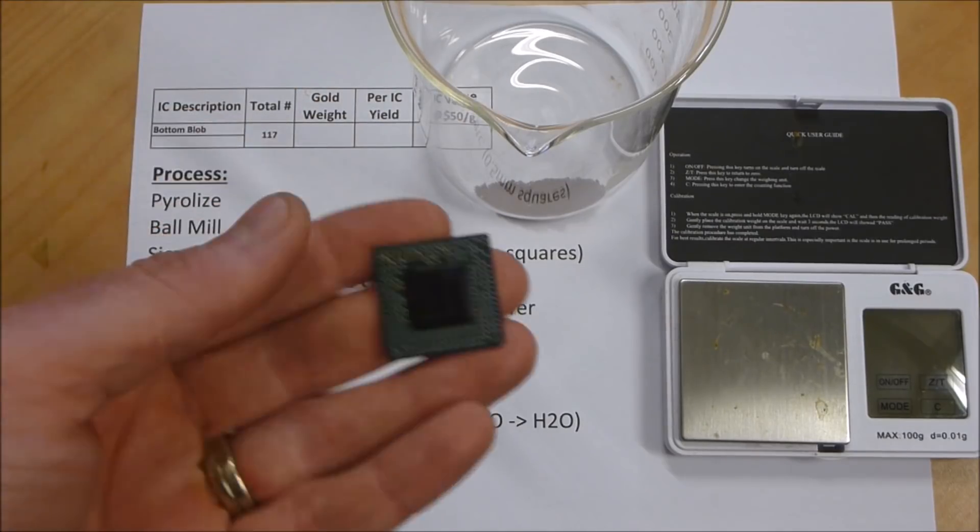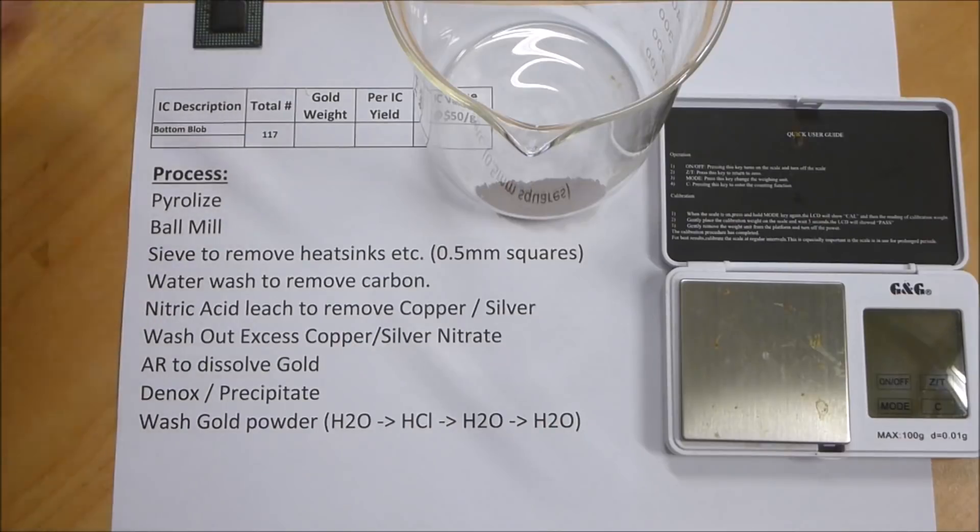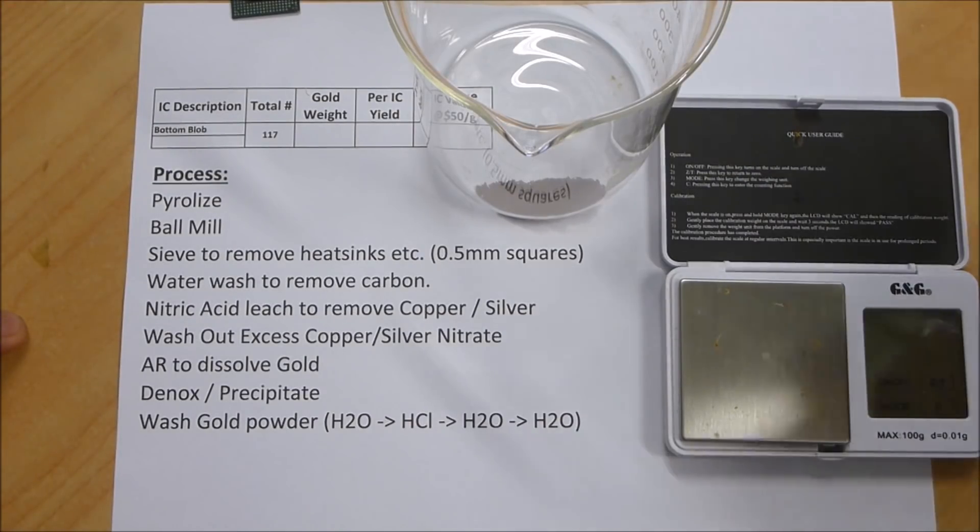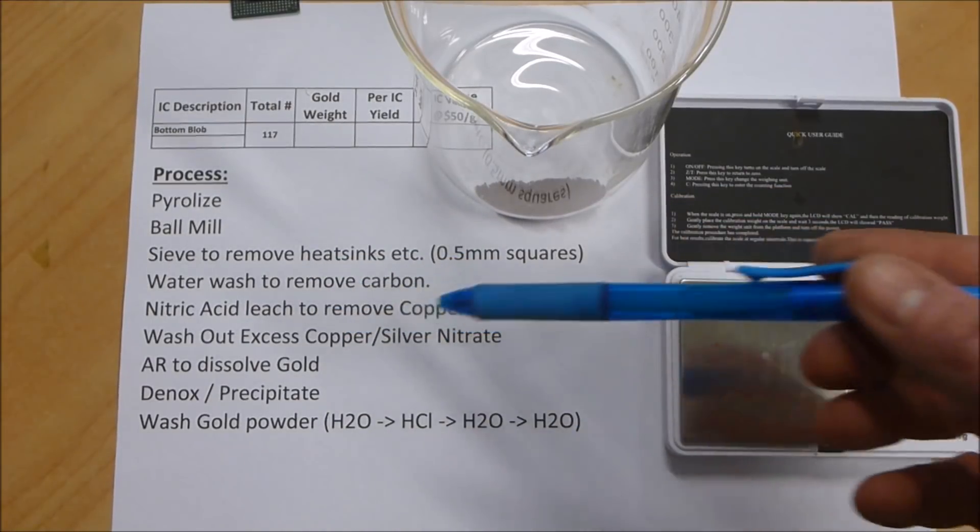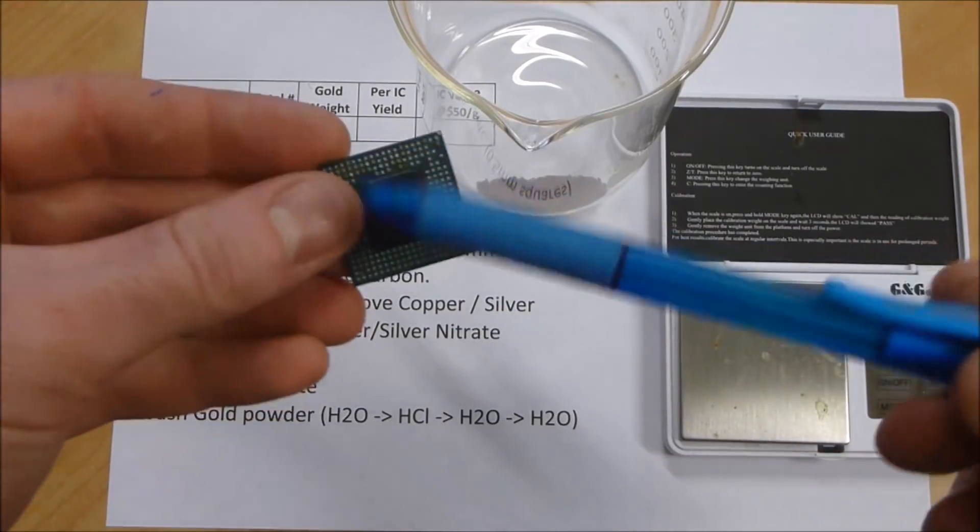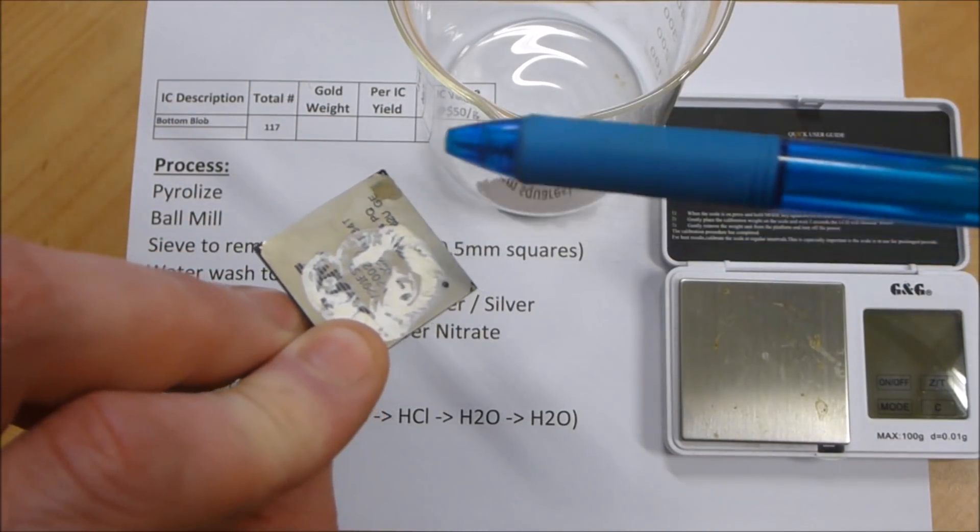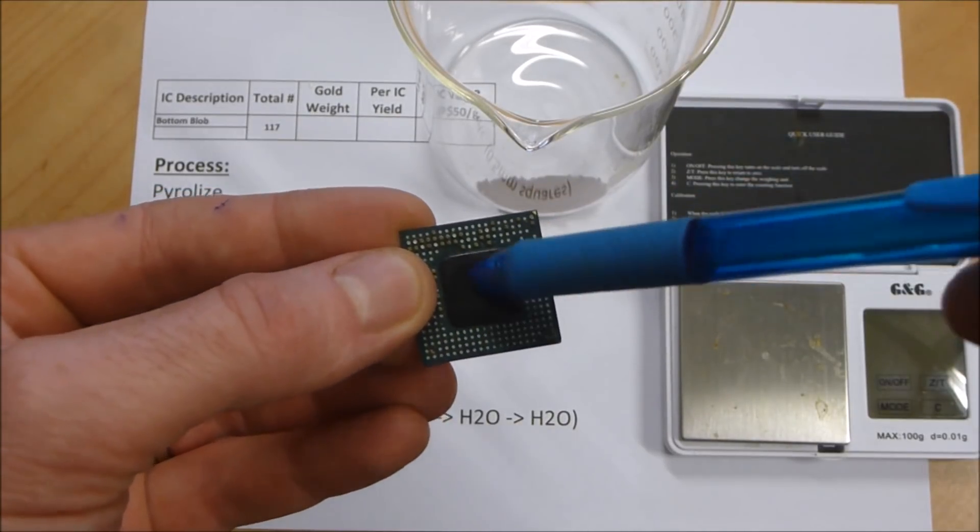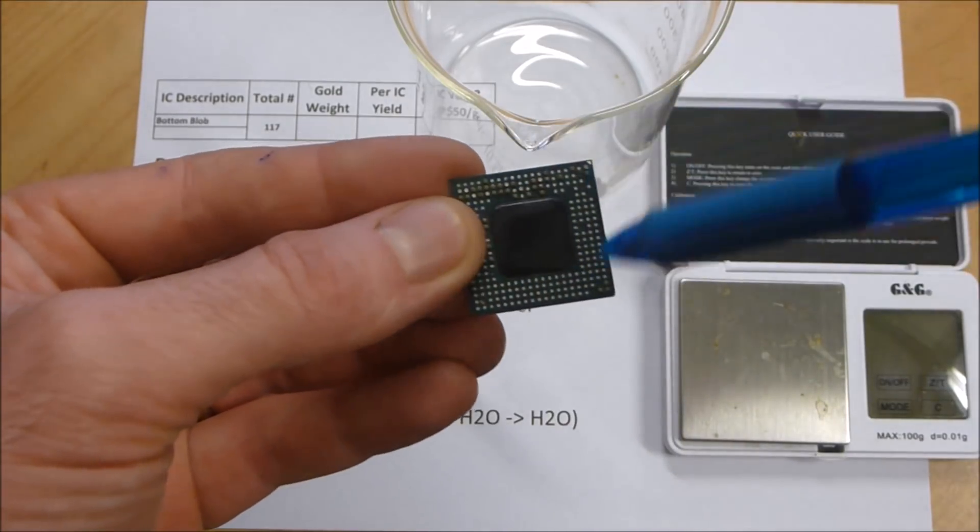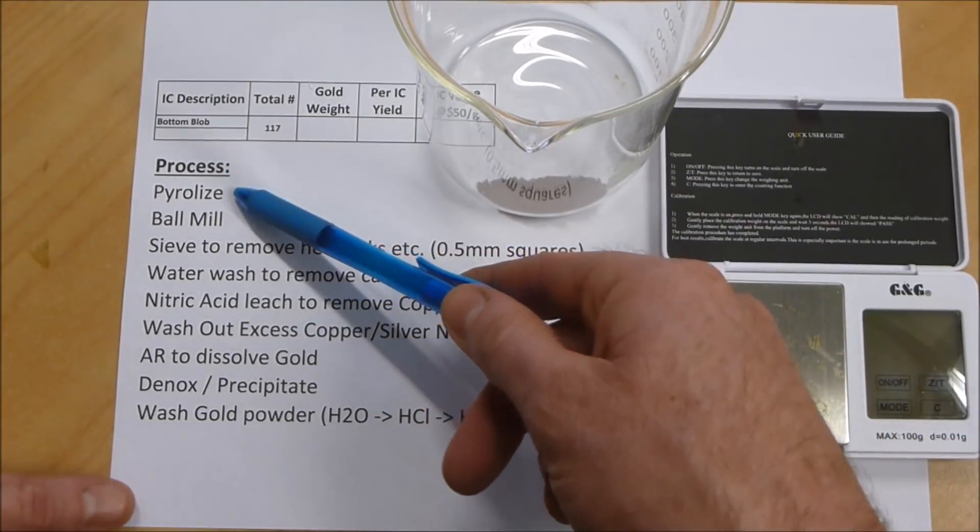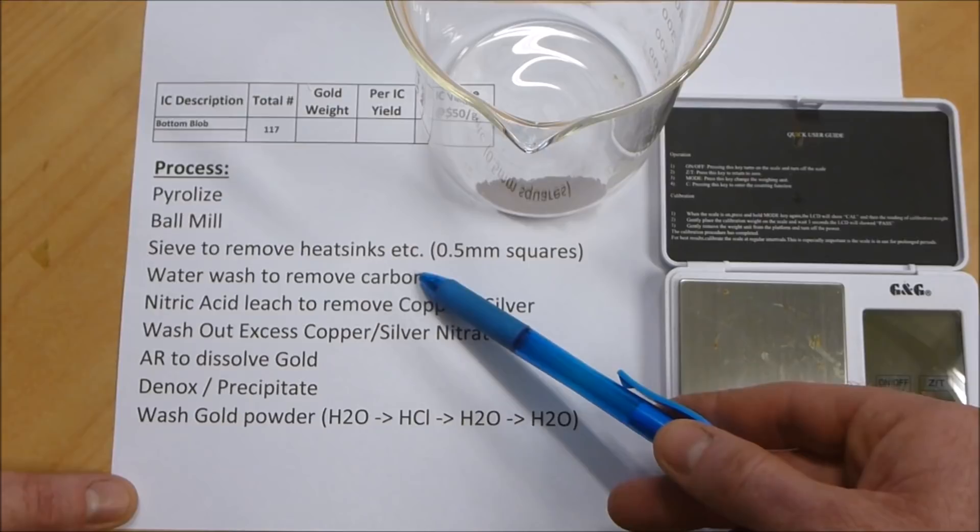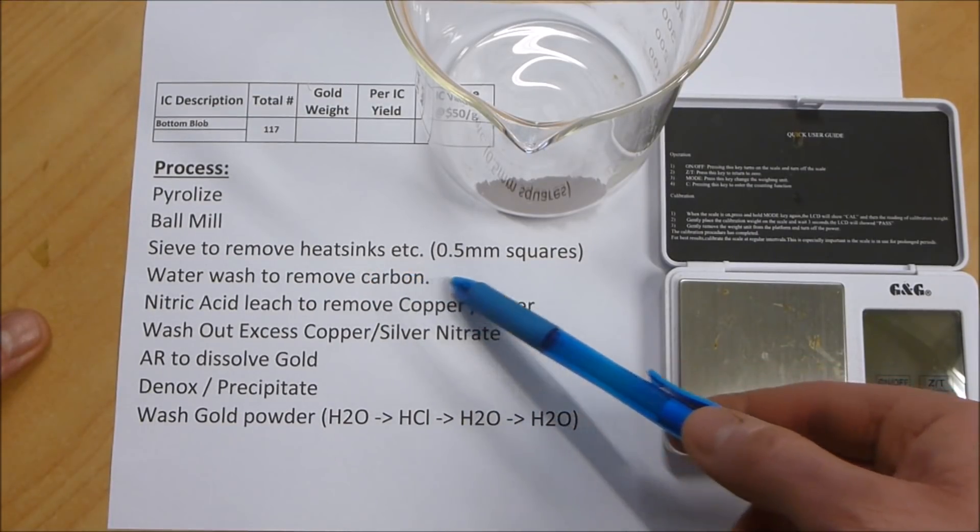I finally finished cleaning the gold from these bottom blob ICs. I thought we'd do a quick live weigh-in and some live mathematics, and that way we can see what these things are worth per dollar. Just a very quick recap of the process for those who learn easier from lists. I took these ICs, removed the copper from the top using a knife to separate them, then used aviation snips to cut out just the black centers and threw away the tin coated balls around the side. I pyrolyzed those, after which I gave them a few hours in the ball mill to get them nice and well smashed up. Then I sieved them to remove any large parts that weren't going to break up, using my sieve that has about 0.5 millimeter square holes.